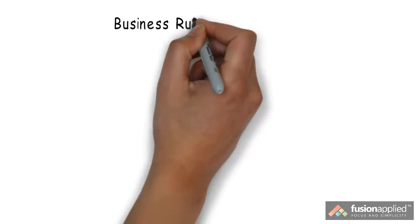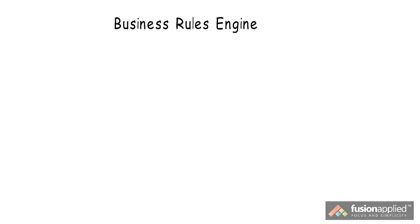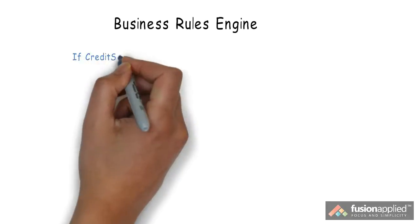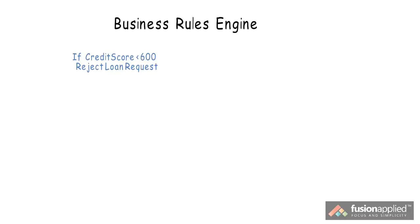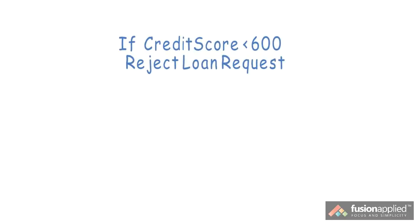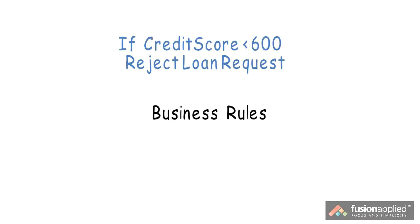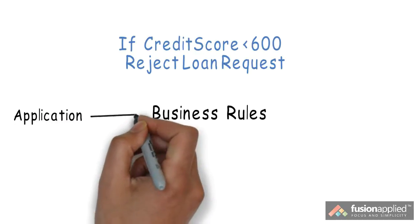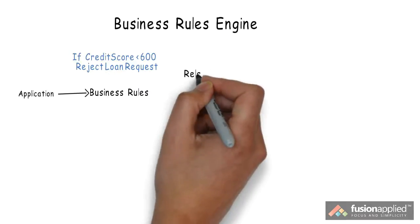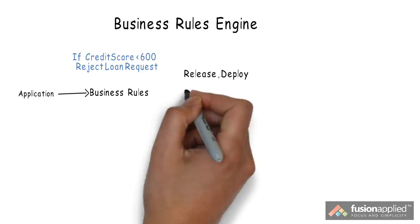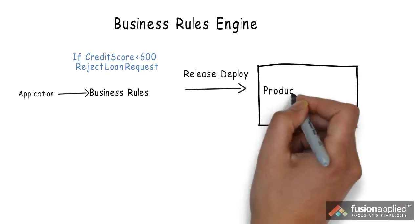Let's see how we do this if we're using a business rules engine. We have the same rule: if credit score less than 600, reject loan request. In this case, the developer will implement this rule in business rules instead of application code, call the business rule from the application code, and then build, release, and deploy both the application and the business rule.